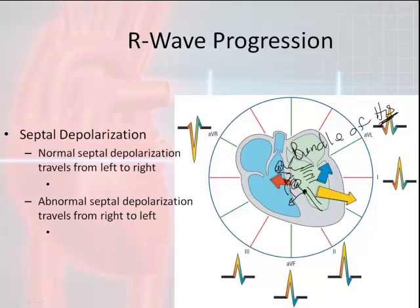The septal fascicle causes the interventricular septum to begin depolarizing on the left side and then the depolarization wave travels towards the right side. With a normal septal depolarization, since electricity travels away from leads 1 and AVL, you will see small Q waves — what I call cute petite little Q waves — in the lateral leads. In the ideal setting, there is no Q wave in the inferior leads, though sometimes you do see them.